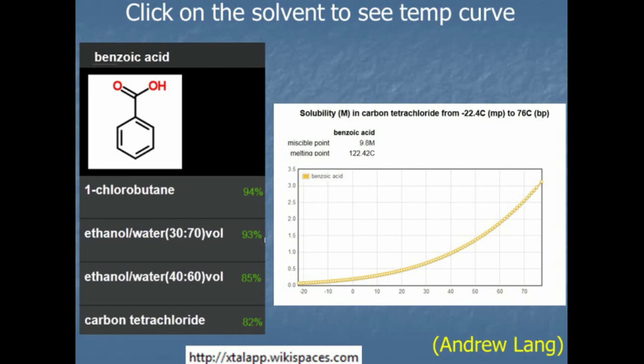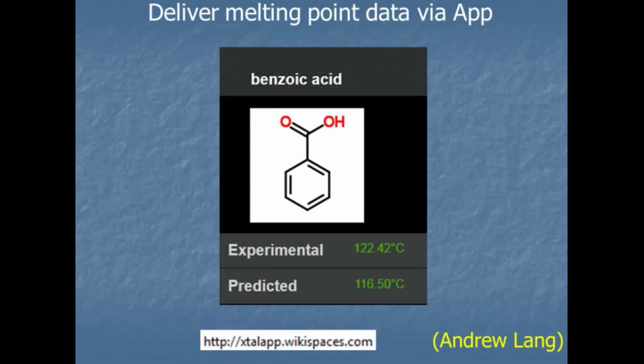If you click on one of these solvents, it will give you a predicted solubility temperature curve. This uses the melting point information, and you can see that going from boiling to 25°C is where the recrystallization yield comes in. You can quickly see what would happen if you were to cool it to zero degrees — you get an extra bump in the recrystallization yield. It's an interactive app where you can use the information as given, but you can also play with it. You can also get experimental and predicted melting point numbers.